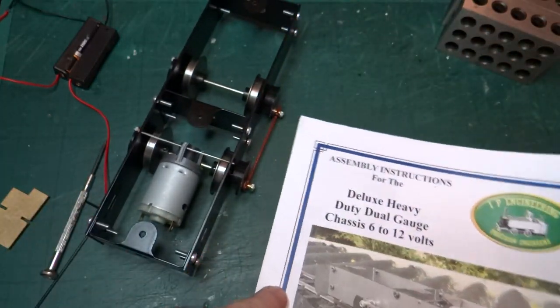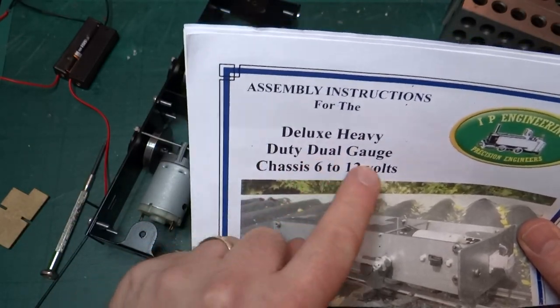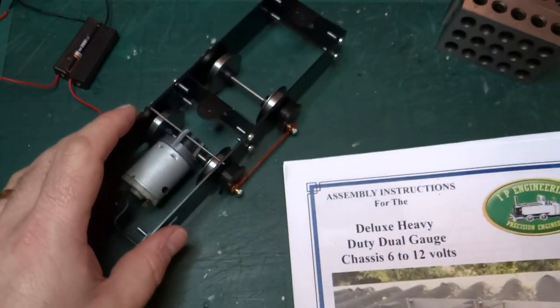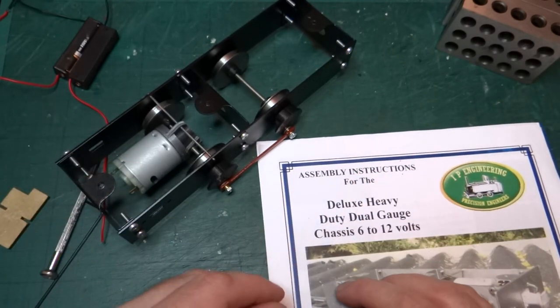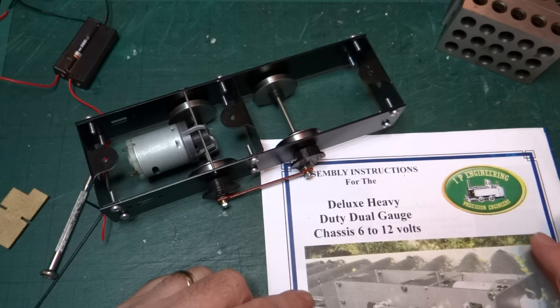Specifically, if we look at the instructions, the chassis is described as being a deluxe heavy duty dual gauge chassis, which is exactly what I wanted because I wasn't sure whether I wanted to build this to 32mm gauge or 45mm gauge.